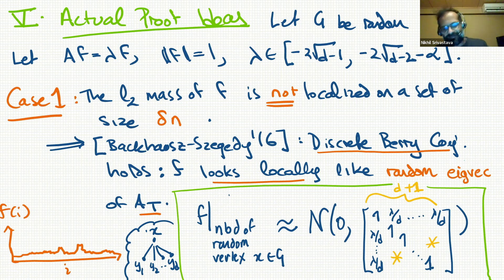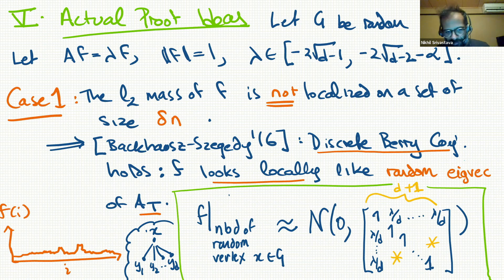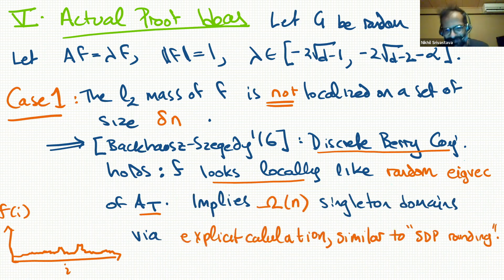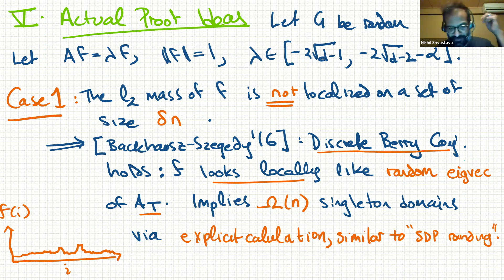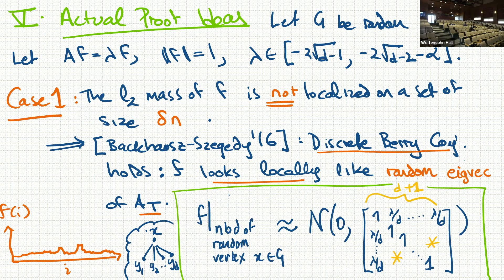Given this Gaussian approximation, the key feature is that the covariance between X and y_i is lambda/D. When the eigenvalue is negative, this means signs of neighbors are negatively correlated with the sign of X. Then you can do an explicit calculation — similar to Goemans-Williamson type rounding for semidefinite programs — and calculate that the probability a vertex is a singleton nodal domain is a constant. In case one, this gives a linear number of nodal domains, and we don't really use the 2*sqrt(D-2) condition here — only that the eigenvalue is negative.